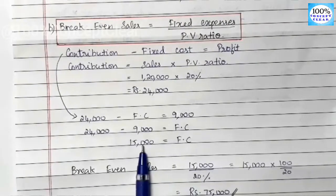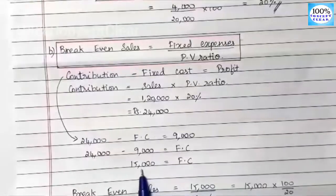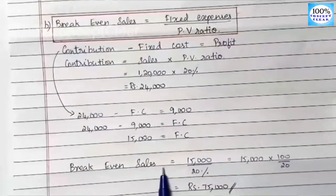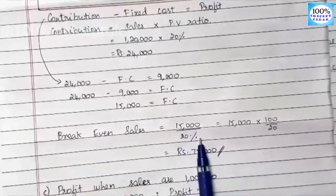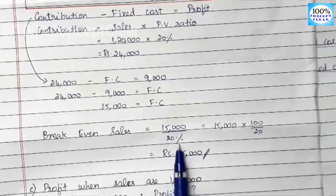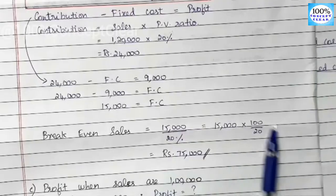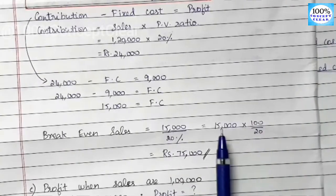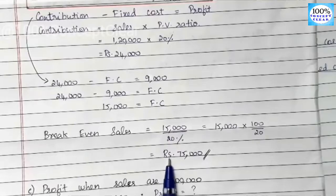Now we apply the break-even sales formula. Break-even sales equals Fixed Expenses divided by PV ratio, which is 15,000 divided by 20%. Converting: 15,000 divided by 20/100 equals 15,000 multiplied by 100/20, which gives us Rs.75,000. So break-even sales is Rs.75,000.